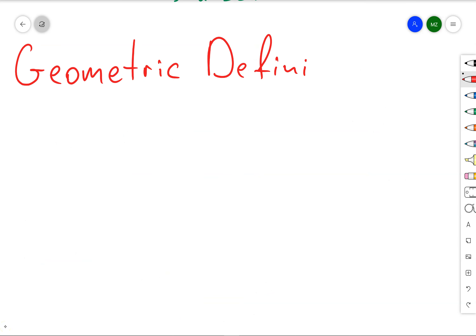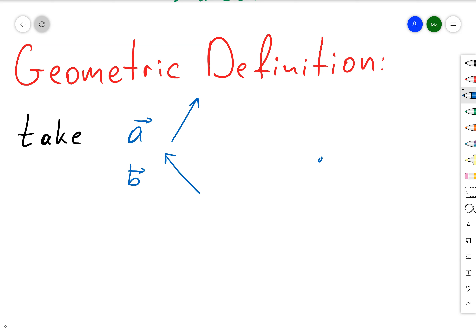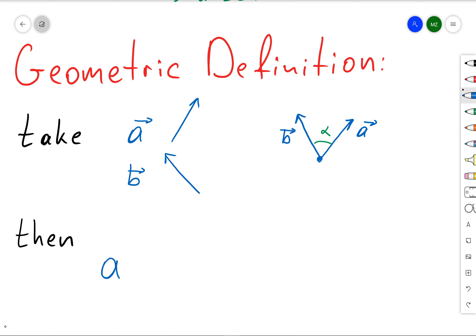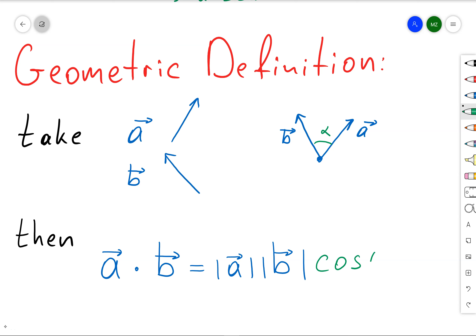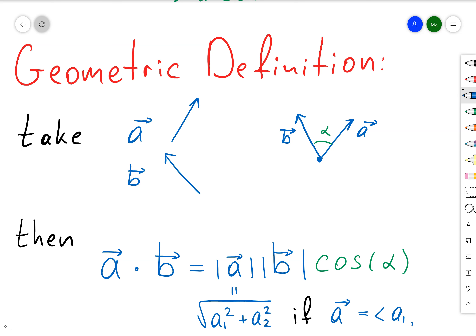Next, let's define the dot product using the geometric definition. Take vectors a and b, think of them as line segments, and attach them to the same point. There will be an angle alpha between them. Then a dot b equals the magnitude of a times the magnitude of b times cosine of alpha. If a is written in coordinates a1 and a2, then the magnitude of a is the square root of a1 squared plus a2 squared.